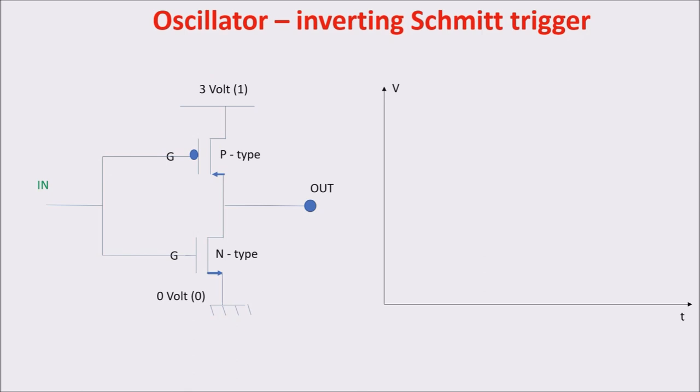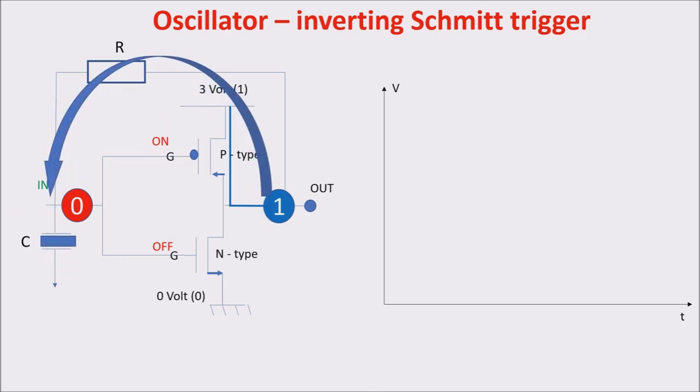Let's see now what happens to the input and output voltages in this circuit. We consider the CMOS inverter with positive feedback with the resistor and the capacitor. We start with the capacitor discharged, so the output is at 1, more or less at 3 volts in this example, and it starts to charge the capacitor in input. The input voltage increases and the output voltage stays at 1, or 3 volts in our example.